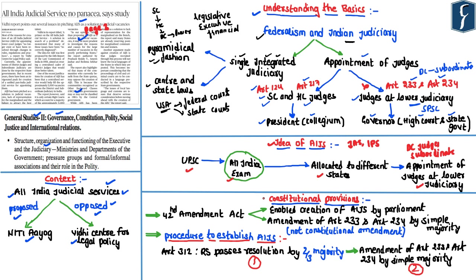Coming to the constitutional provisions related to the creation of the All India Judicial Service: Article 312 of the Indian Constitution deals with the creation of an All India Service by the Rajya Sabha, wherein in order to create an All India Service, the Rajya Sabha is required to pass a resolution supported by at least two-thirds of the members present and voting. Apart from that, the Indian Parliament has passed the 42nd Amendment Act, which has enabled the creation of the All India Judicial Services. To create an AIJS, we would be required to amend both Article 233 as well as Article 234.